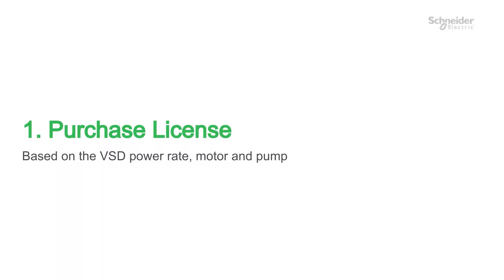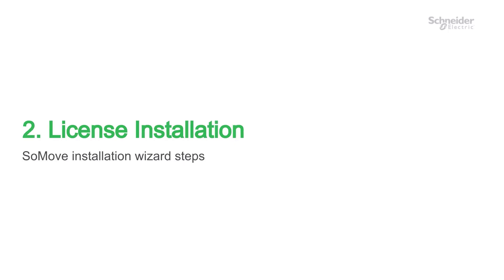First, purchase your ATV PREDICT license based on the VSD power rating and the components you want to address: the VSD, motor, and pump. Next, install the license using SoMove.